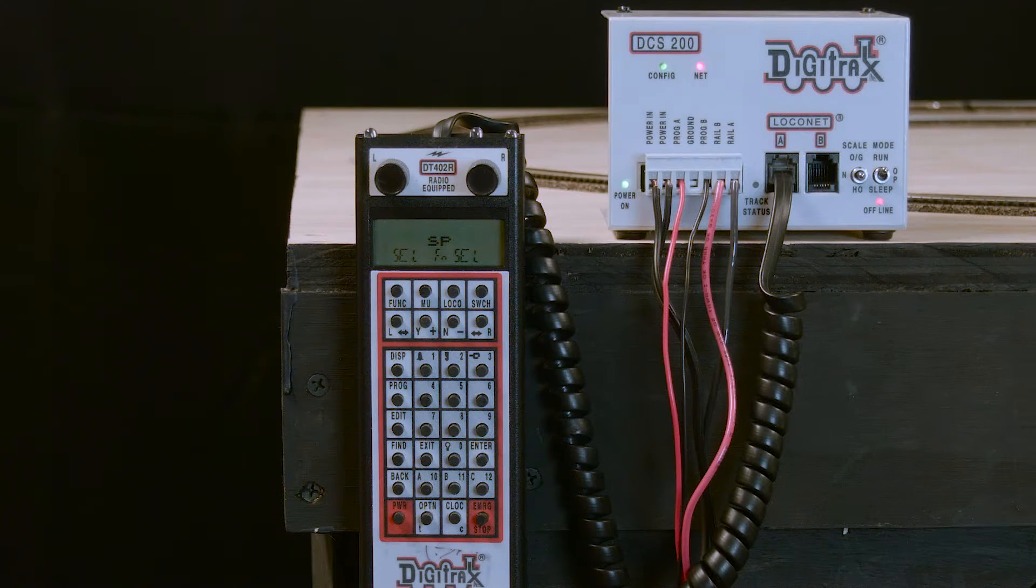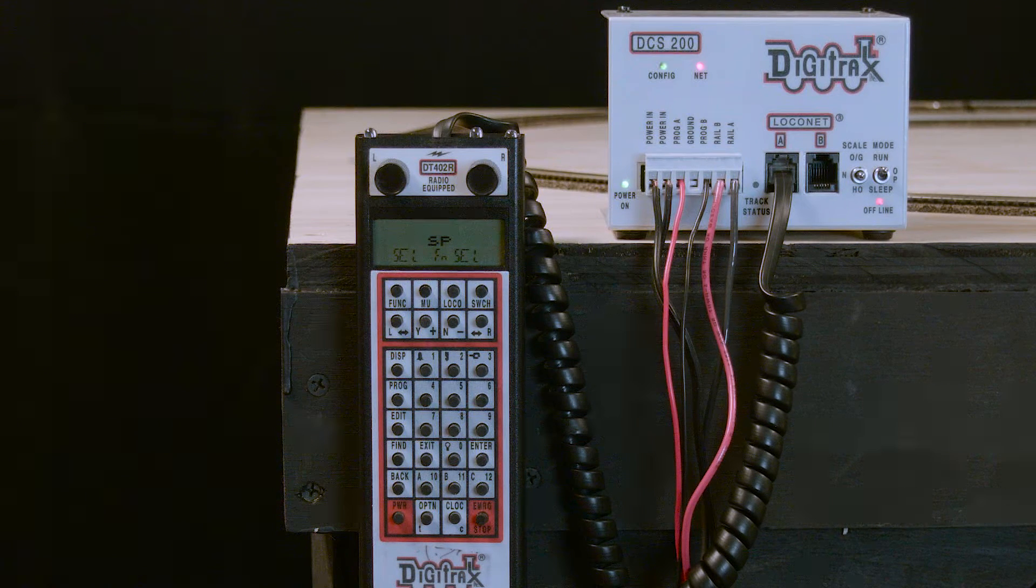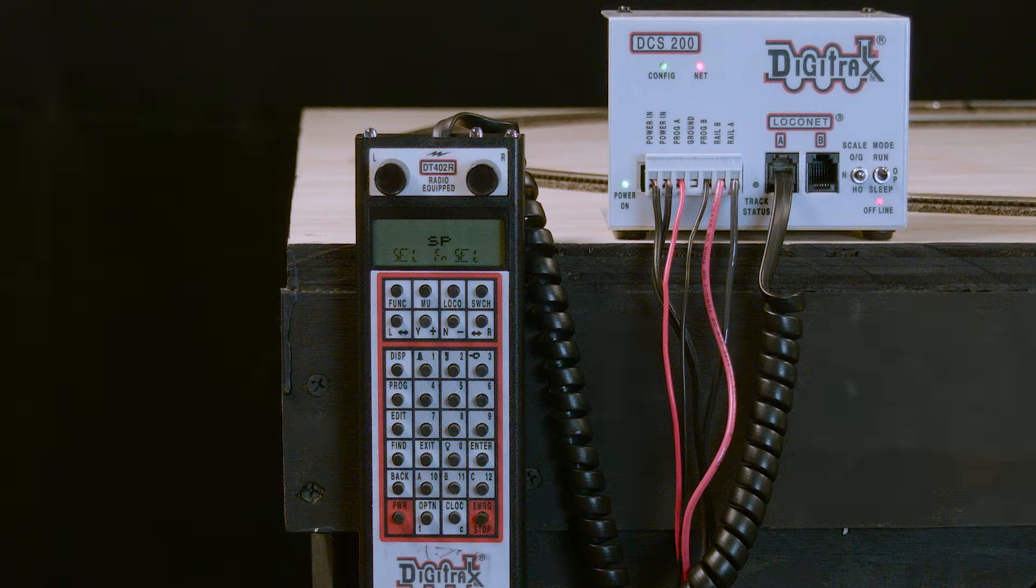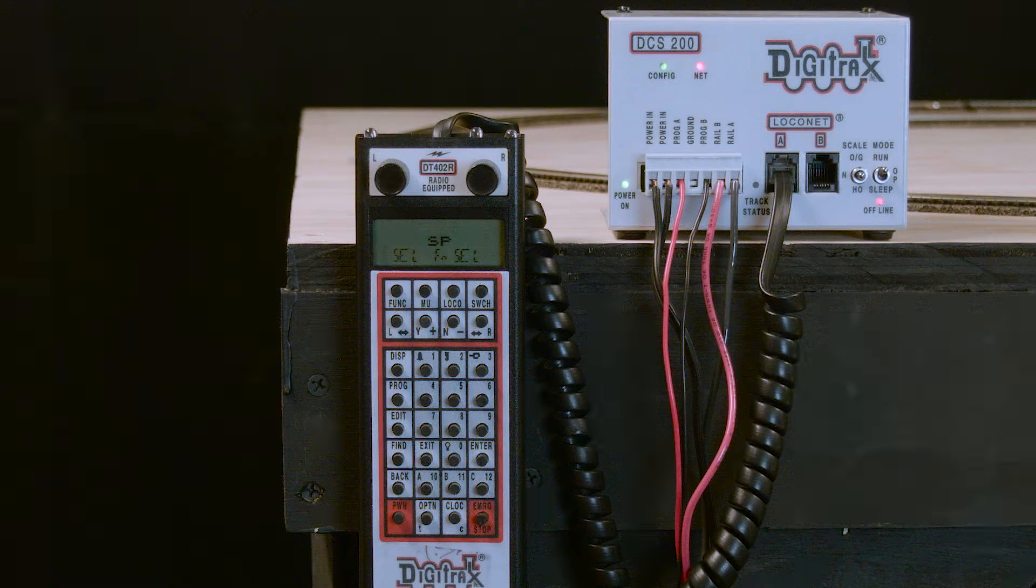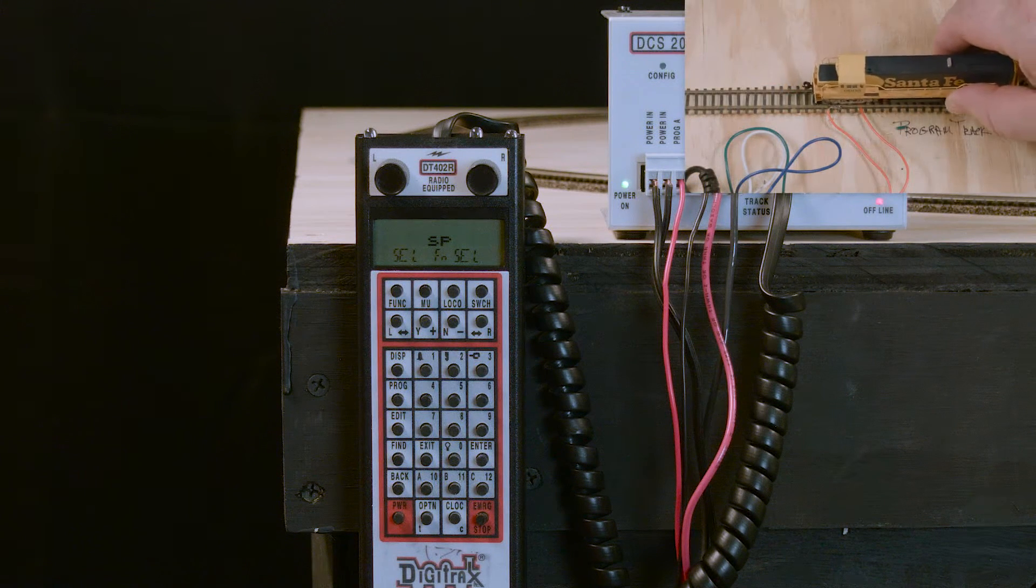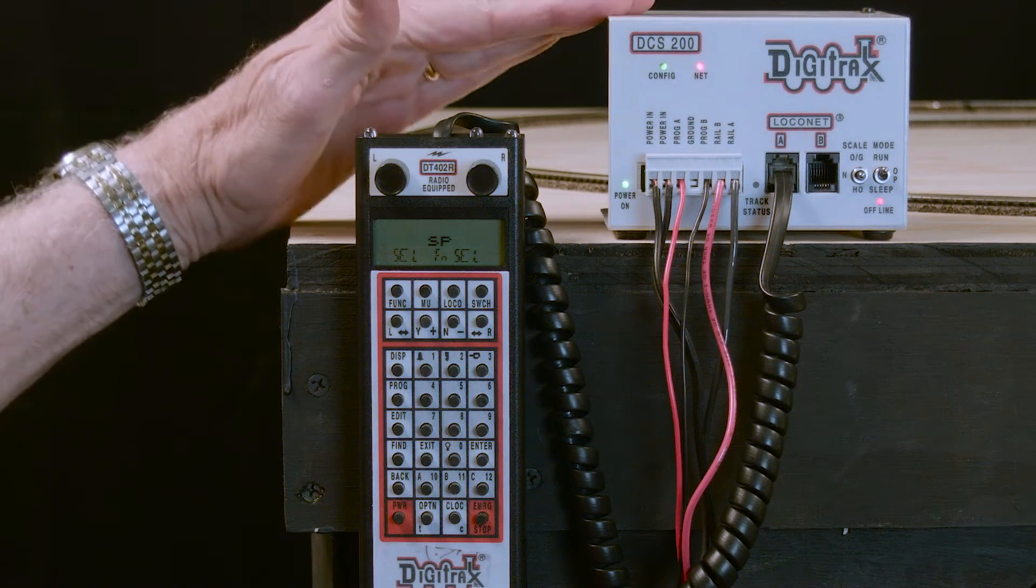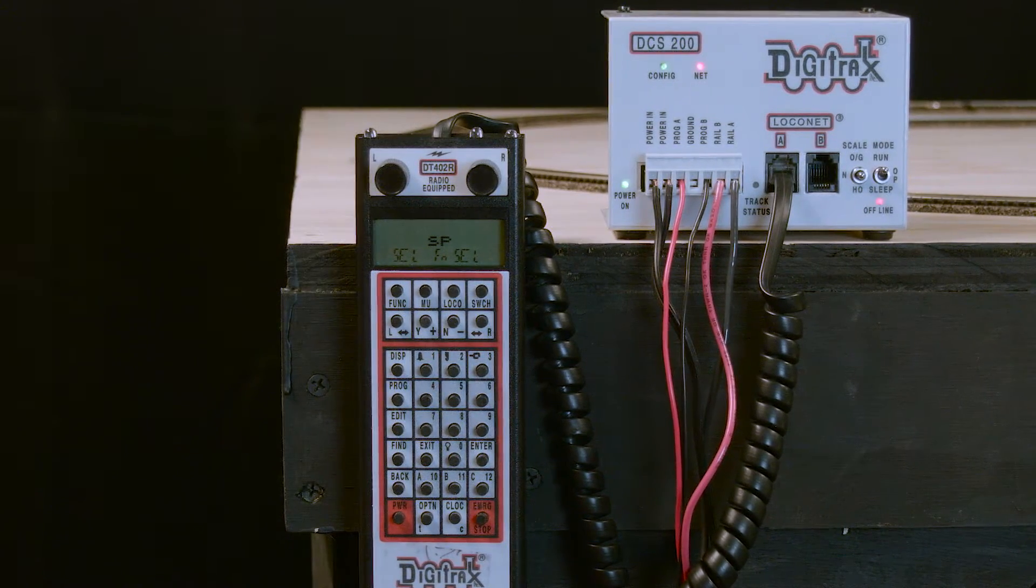To program a locomotive on the program track using a DCS100 or DCS200 along with a DT400 or DT402 throttle, we first place our locomotive on the program track. We then make sure we have power to our DCS100 or 200, in this case a DCS200.